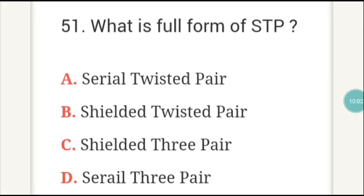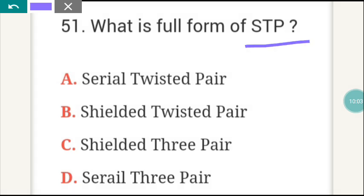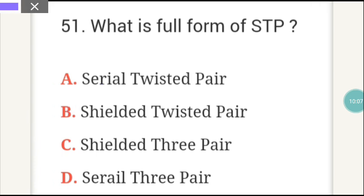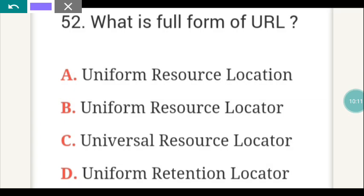What is the full form of STP? STP full form is B. The next question: what is the full form of URL? URL full form is B — Uniform Resource Locator.